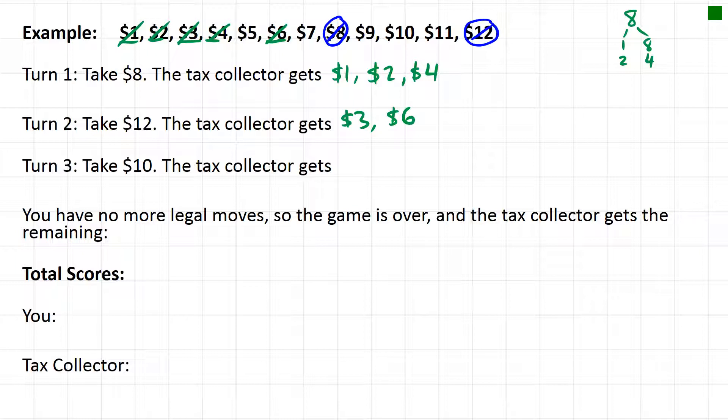I think this is probably looking pretty good for us. The next one I'll take is ten. Are there any factors of ten remaining? Yeah, five is a factor of ten that's left, and so is two, but again two's already been chosen, so just five of the ones that are left. So the tax collector gets five.